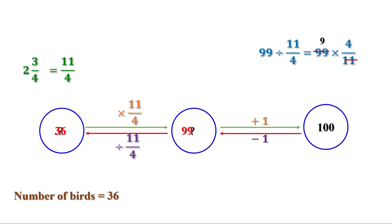Let us check: 36 plus 36 is 72. Half of 36 is 18, and 72 plus 18 is 90. Half of 18 is 9, and 90 plus 9 is 99. Plus 1 is 100. So the answer is right. That's all for today.